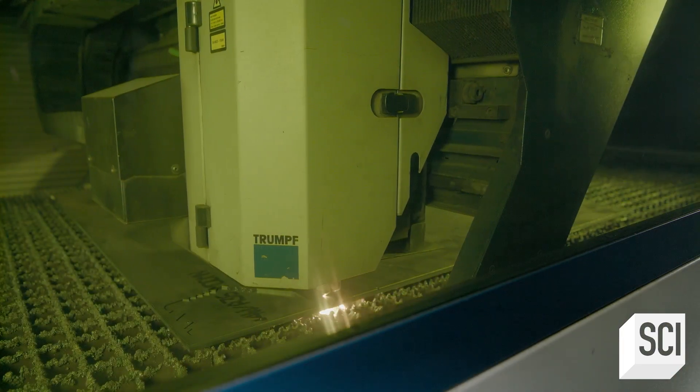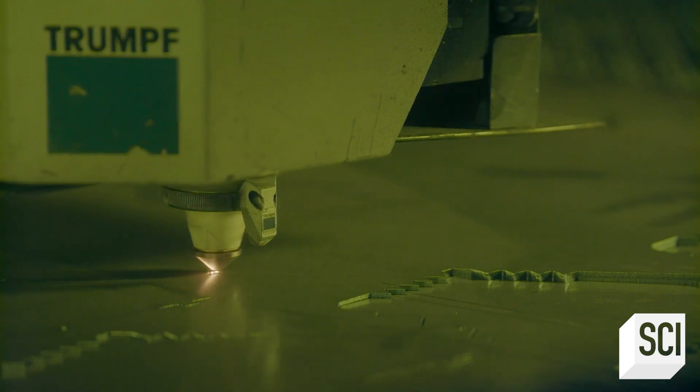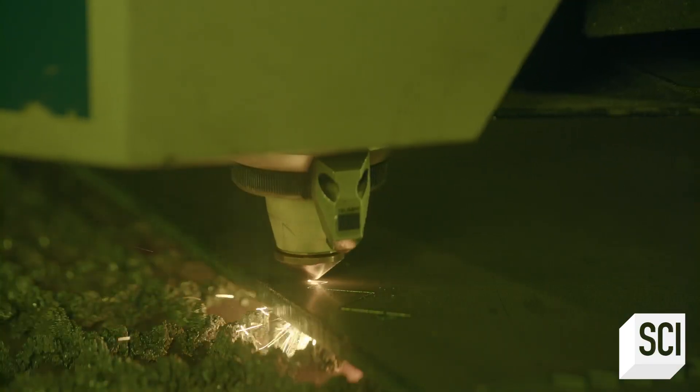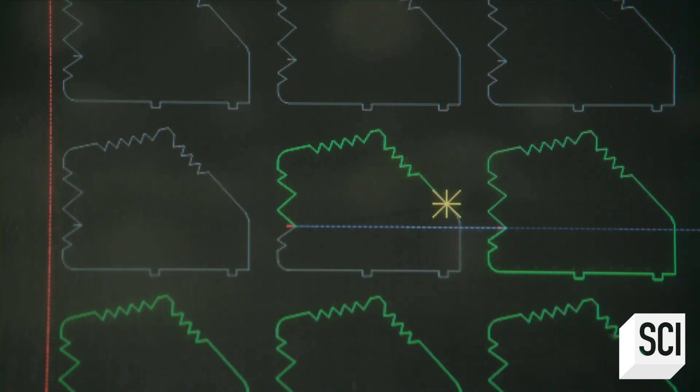A computer guides this fiber optic laser cutter, slicing out the impeller blades from a sheet of abrasion-resistant steel. This steel is four times thicker than the steel used for the body parts.